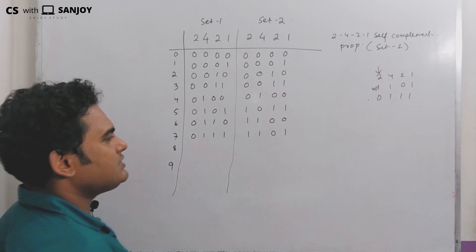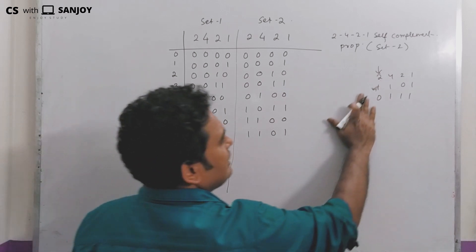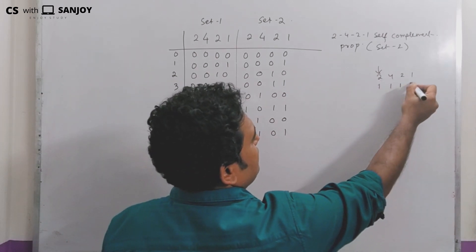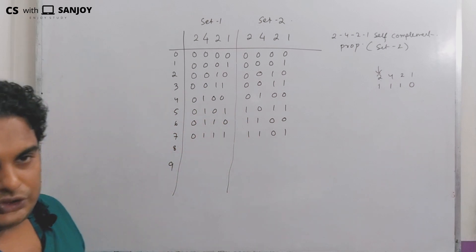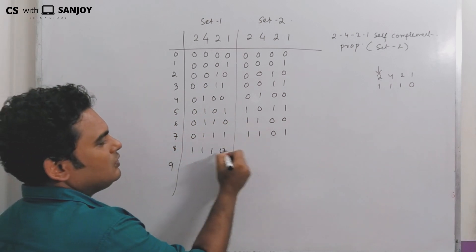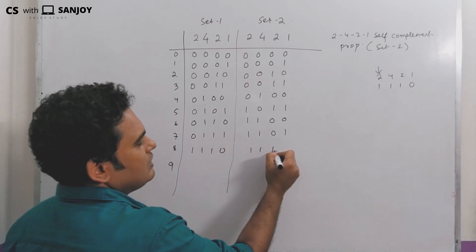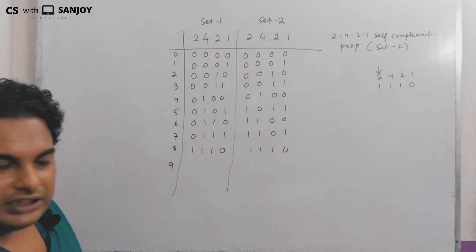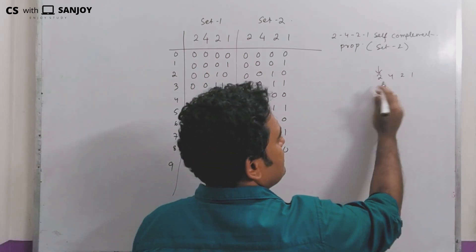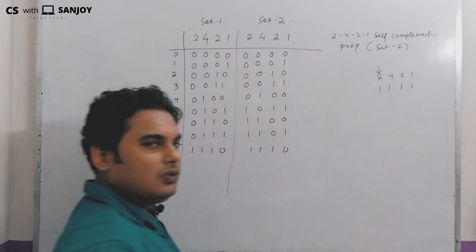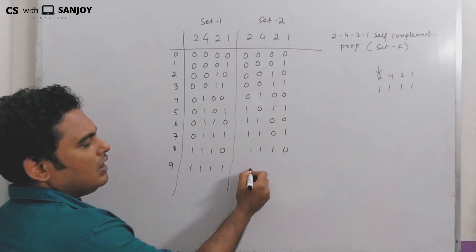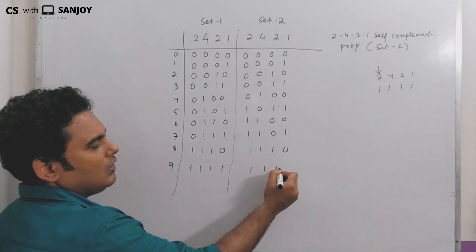For digit 8, we write 1110 — because we don't have other options, so 1110. For digit 9, all bits should be 1, so we write 1111. There is only one representation for both 8 and 9.